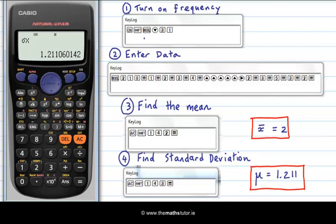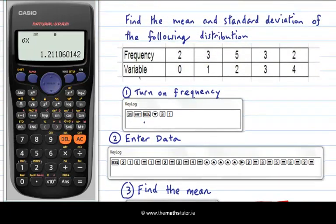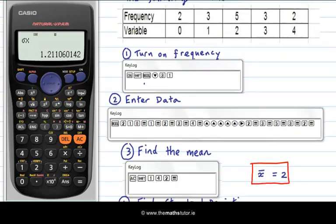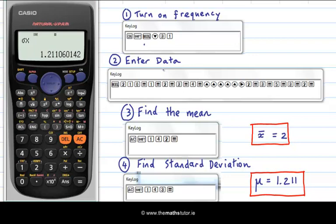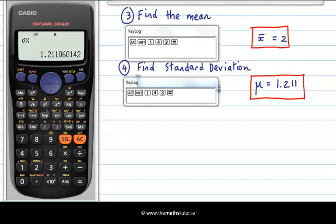So just to summarize. First of all with a frequency distribution like we had here where we are asked to find the mean and standard deviation we need to first turn on the frequency. Those are the steps there for it. Let's scroll down. We can then enter our data with the frequencies. And then we can find the mean and the standard deviation.